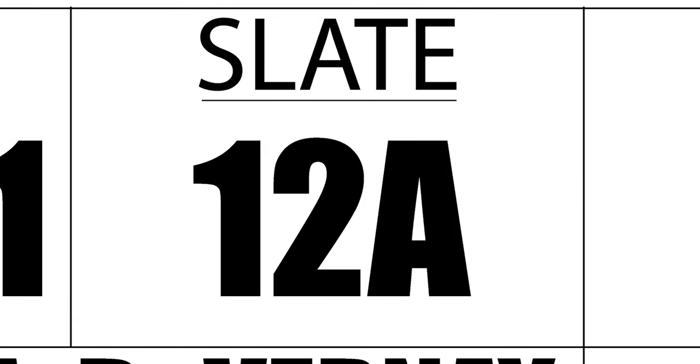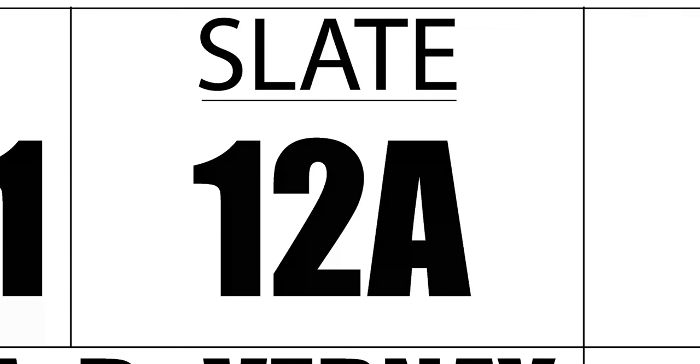Next to that, you'll have the slate number. The slate number isn't necessarily the scene — in most cases it is, but sometimes it can just be a shot number. There are a couple of different ways to label your slate and we'll get into those in just a moment. Then next to that, you'll have take, which is the take number. So you've done one run through — that's cut and finished. You do another run through — that's take two, take three, take four, take five.